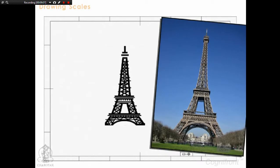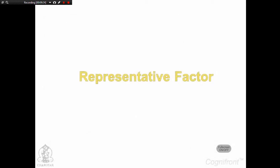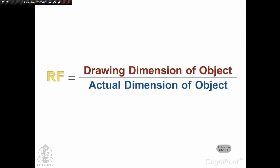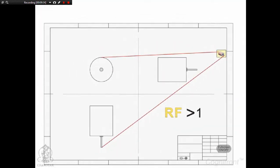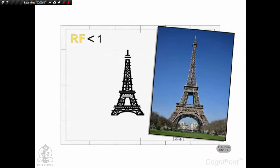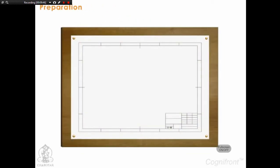Generally the prototype is either too large, for example the Eiffel Tower, or too small, for example a micro scale motor, and we will have to scale down or scale up the dimensions. The representative factor RF is a ratio of drawing dimension to the actual dimension of the object. If RF is greater than 1, the drawing is enlarged; if it is less than 1, the drawing is a reduced view. We then put together a layout on paper, including margin, border, and other entities.